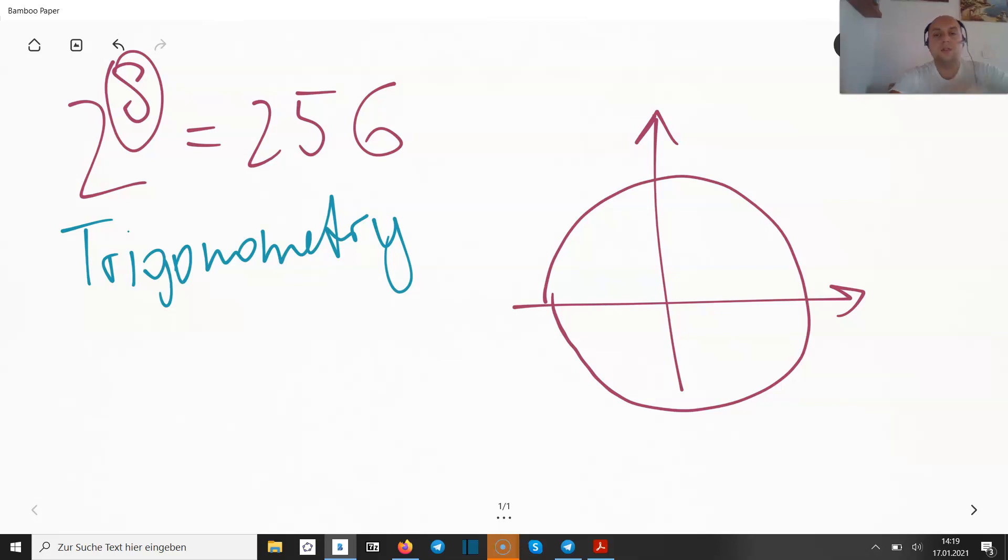And if we're talking about a unit circle, we have one here, one there, minus one here and minus one there. So everything is pretty fine. And then we are talking about an angle right here. Let's call it gamma. All right. So the thing is, every point out of these four has its coordinates: one zero, zero one, minus one zero and zero minus one. That's fine. But what about this one?